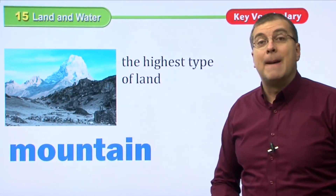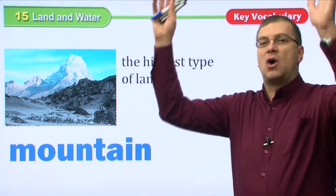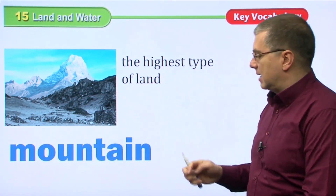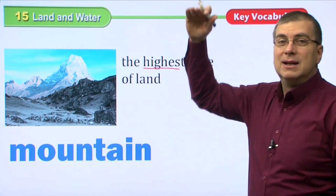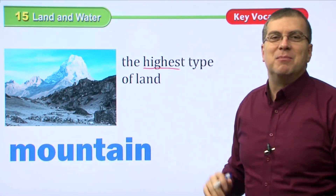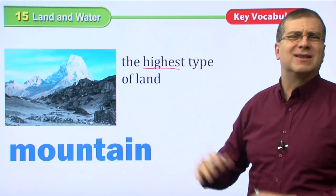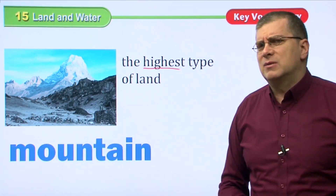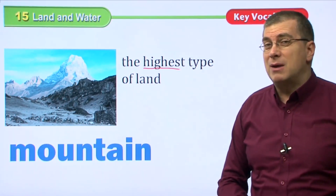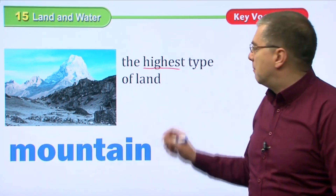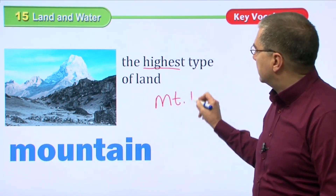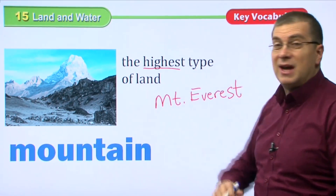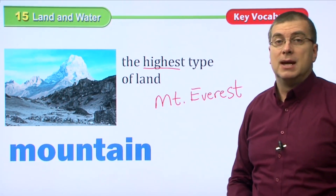The first one is mountain. As you can see in this picture, very tall mountains. A mountain is the highest type of land — don't say 'most high,' it's 'the highest.' The highest place you can go on Earth is in a mountain. Do you know the highest mountain? It's Mount Everest, right? Mount Everest is the highest place on land.